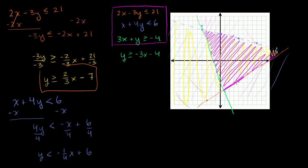We include this boundary here and that boundary there. Since the second inequality was strictly less than, that upper boundary is a dotted line — you're not actually including that line. Hopefully you found that useful.